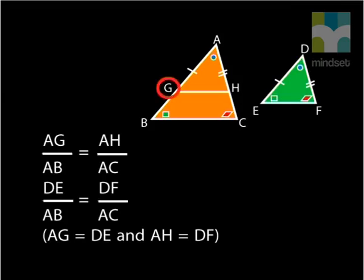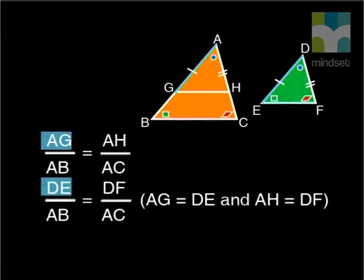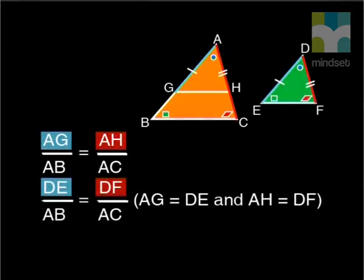Stop again and look at the diagrams. We cannot keep using G and H because these were points we constructed. They can't be part of the end of the proof. But we made AG equal to DE and AH equal to DF. So we can put these sides into the proportion statement.